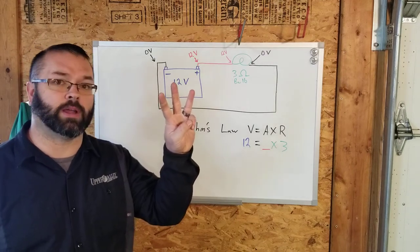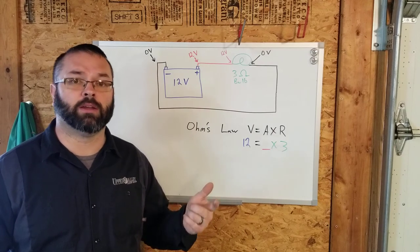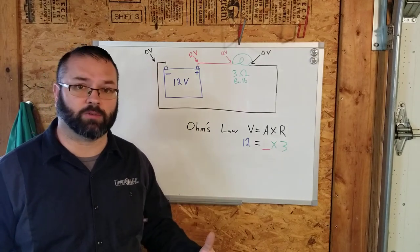So three things again for a complete circuit. Power supply, which is our battery, our conductors, which is our wiring, and our load, which is our bulb. It's producing work for us.